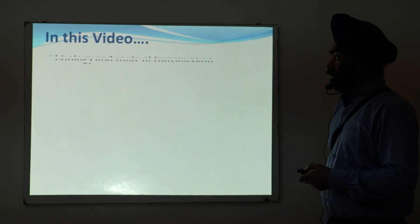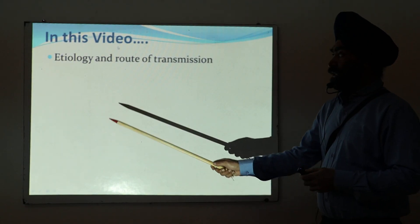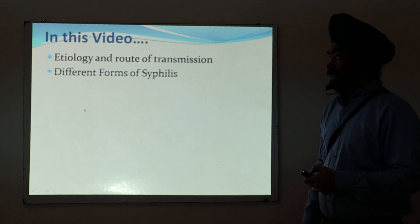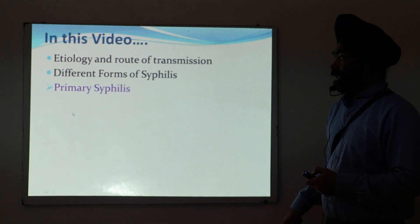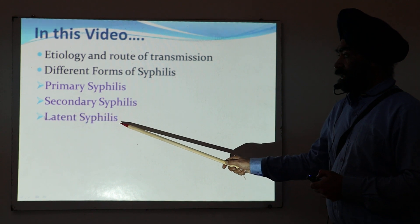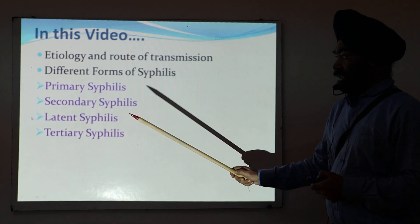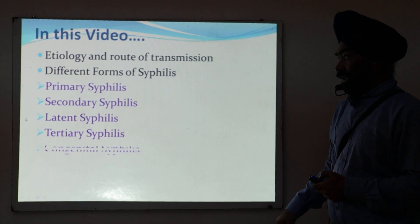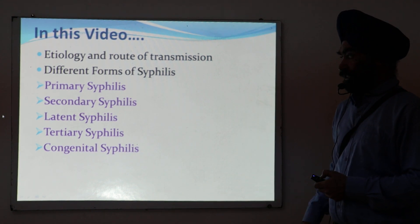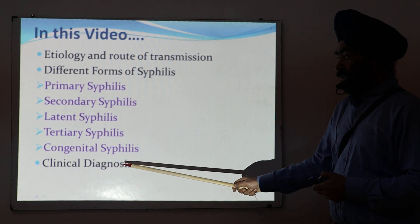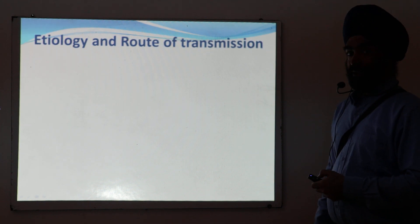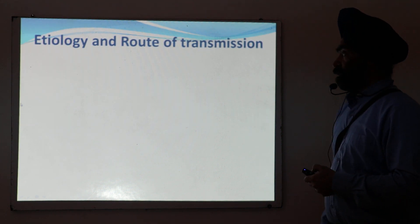In this video, I will discuss the etiology and route of transmission of syphilis, different forms of syphilis like primary, secondary, latent, and tertiary syphilis, along with congenital syphilis. These are the different forms of syphilis along with the clinical diagnosis. So first of all, etiology and route of transmission.